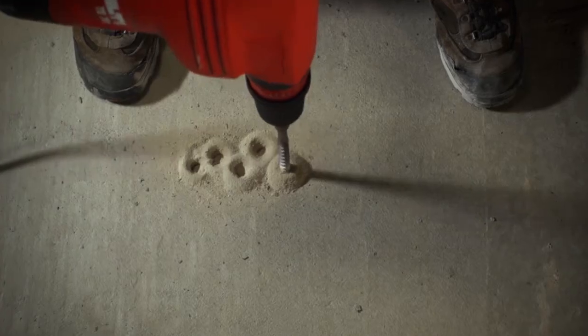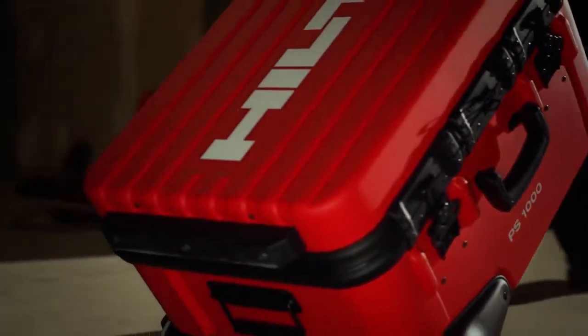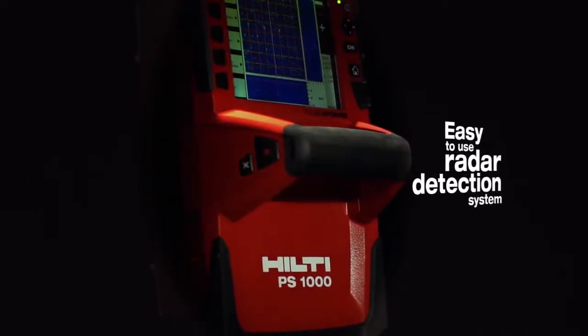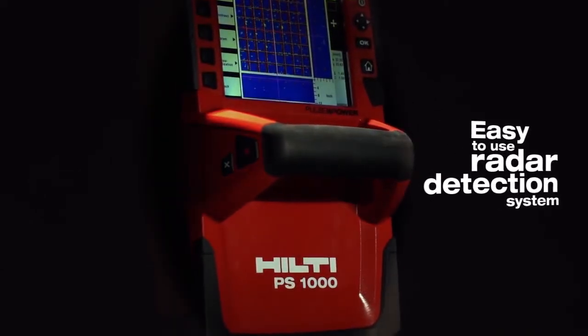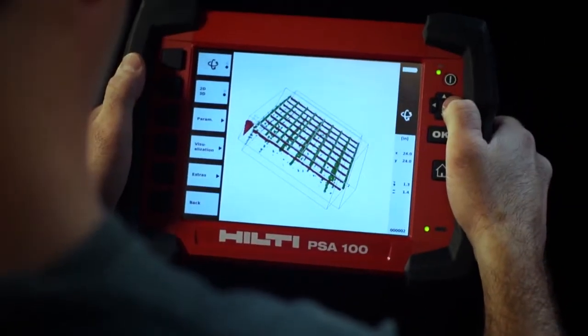Gone are the days of drilling to find out what's inside concrete or hiring specialists to come find out for you. The new Hilti PS-1000 X-Scan is the industry's first easy-to-use radar detection system, allowing contractors to produce large area images of what's inside concrete structures.